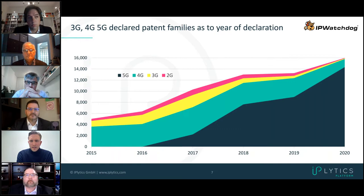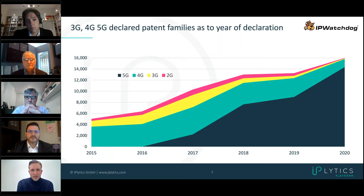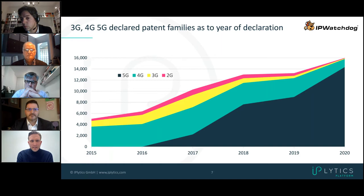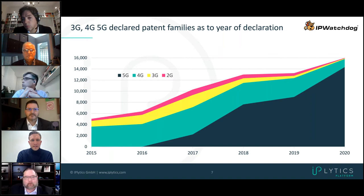In this slide, we broke it down to the different generations. Again, it's not a cumulative graph — it's net new declared patent families. We do see that from generation to generation we see more declared patent families, which is a sign that we advance in technology and in innovation. That also means more patents being declared essential.